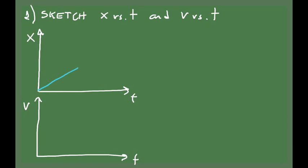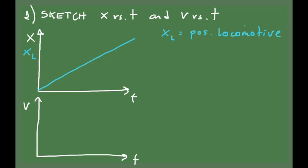Here we're going to go a little beyond that and put a lot of information into the sketch of position versus time. The first piece of information we want to put in is the position versus time plot for the locomotive. We know the locomotive is moving with constant velocity, so the position versus time plot should look like a straight line with a definite slope. And if we plot the velocity as a function of time for that locomotive, it will be just a horizontal line.